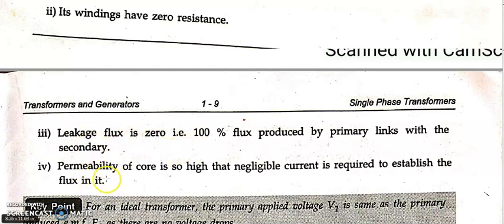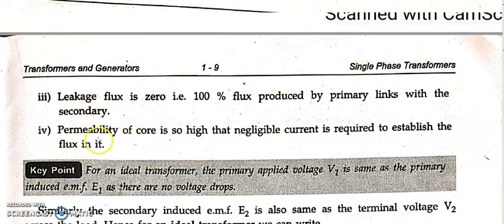The fourth property: permeability of the core is so high. We use thin laminations to reduce eddy current loss and high-grade silicon steel to reduce hysteresis loss. But no magnetic core is 100% pure. Here they are assuming the magnetic core is in its purest form, so it offers no reluctance to magnetic flux. Therefore the magnetizing current flowing in the core is very much negligible — though in reality this is not true.